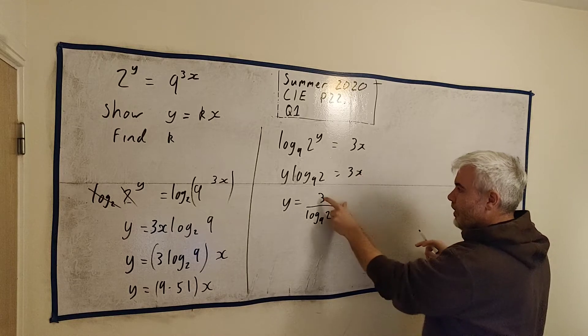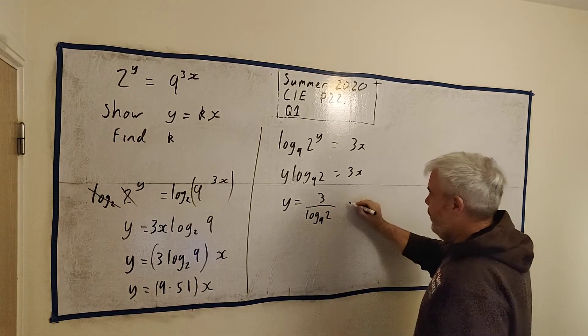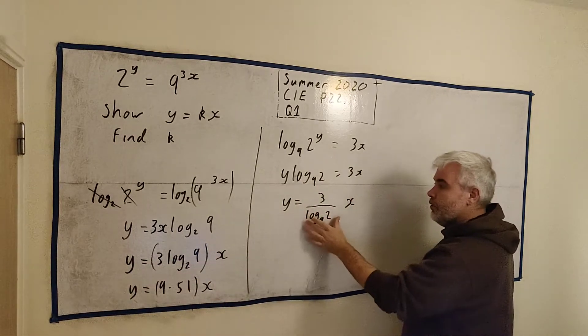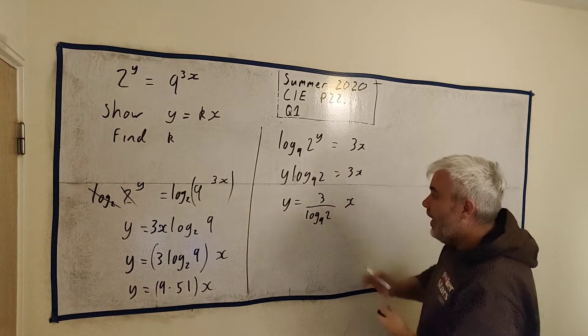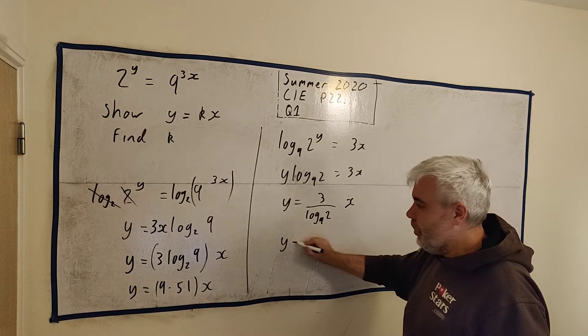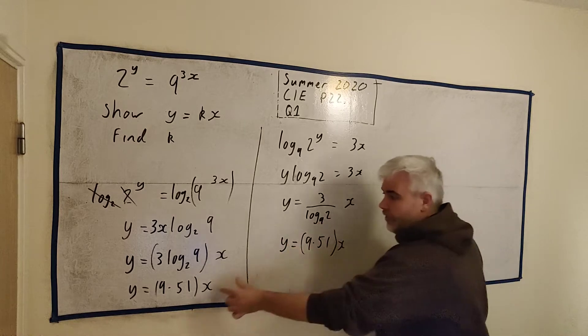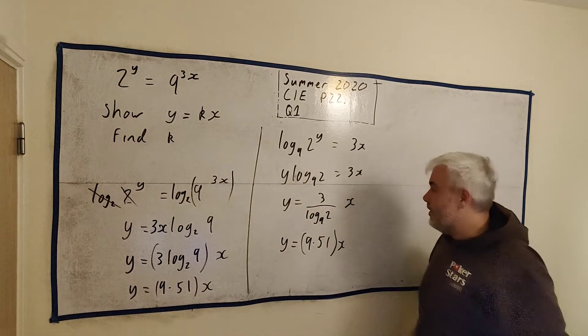And where's x? Here's 3. x is just beside the 3 or I'll put it out here. And that's the same format. Y is equal to something times x. And again if you put that into a calculator you'll get y is equal to 9.51. The same answer. Looks different but it is the same answer.